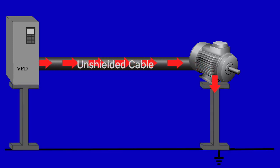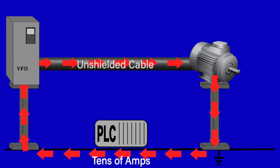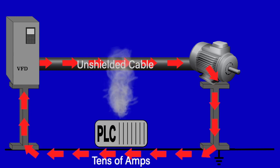This current can travel through the motor frame and base plate and through building steel back to the inverter, potentially creating operational problems for any control or communication devices along its path. Tens of amps flowing on the ground next to one of these devices can cause intermittent issues with the device or outright failure.